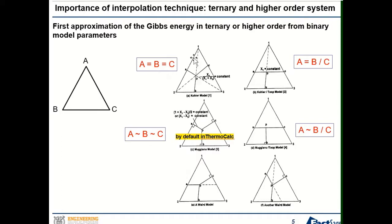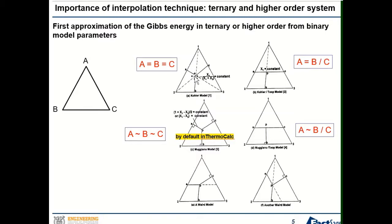For an A-B-C system, there are many different estimation techniques for Gibbs energy from binary model parameters. One is the Kohler type interpolation. For example, if you want to calculate the Gibbs energy at point P in the ternary system, under the Kohler type you estimate the Gibbs energy of this ternary point from the binary Gibbs energies. From each corner through P you draw a straight line, then take the intersection on the binary edge to estimate the Gibbs energy of P. This is symmetric.